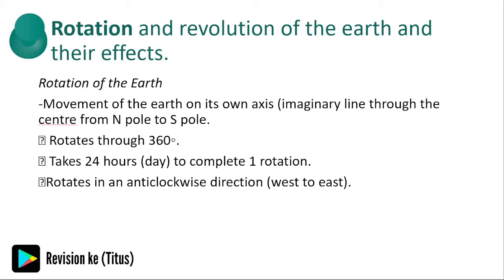We are going to look at the rotation and revolution of the earth and their effects, then the structure of the earth. Rotation is the movement of the earth on its own axis. The earth rotates through 360 degrees, taking 24 hours to complete one rotation. The rotation is in an anticlockwise direction, that is from west to east.